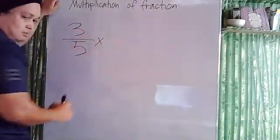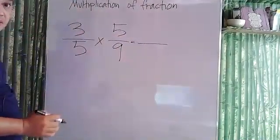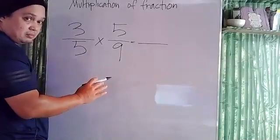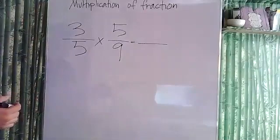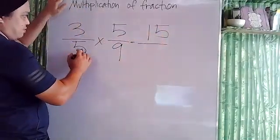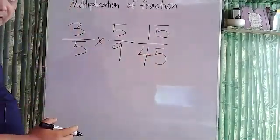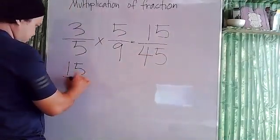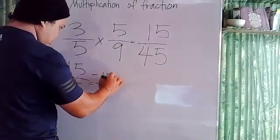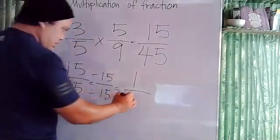Let's start. How do we multiply fractions? Here's 3/5 times 5/9. When multiplying fractions, just multiply their numerator and simplify if possible. So let's multiply: 3 times 5 is 15, and 5 times 9 is 45. We can simplify this because 15 and 45 can be divided by 15.